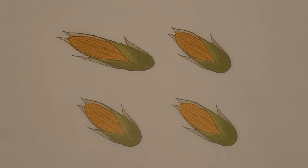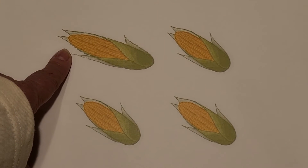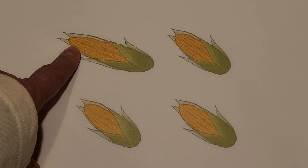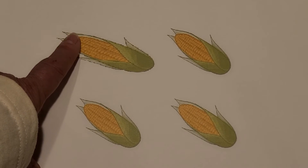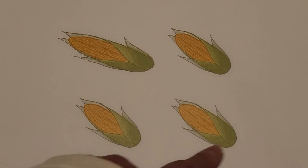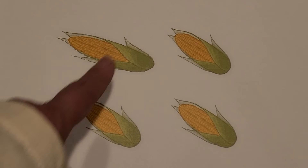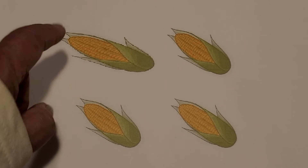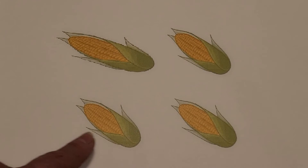I see ears of corn. Can you see an ear of corn that is different than the others? If you said this one, you're correct. This one is larger — it's bigger than the other ears of corn. It looks like it's longer and these are all shorter.